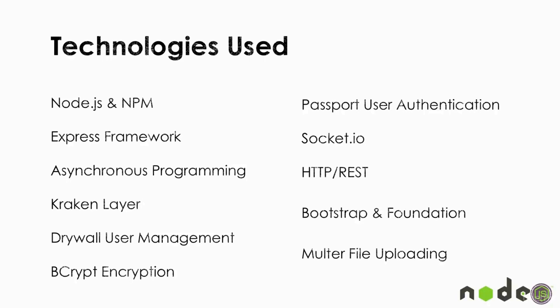We'll be using Express in most of our projects with asynchronous programming. In one or two projects we'll use Kraken, which is an extra layer that runs on top of Express for more functionality and security. We'll also use Drywall, a user management system; bcrypt for encrypting and hashing passwords; Passport for flexible user authentication; Socket.io for web sockets; Bootstrap and Foundation as front-end CSS frameworks; and Multer, a file uploading module.